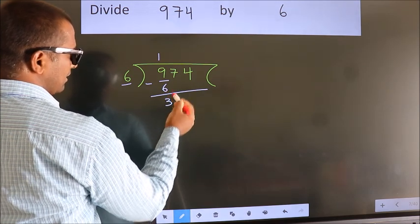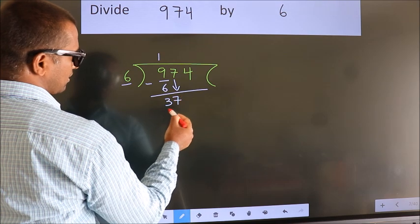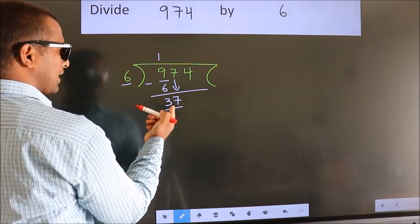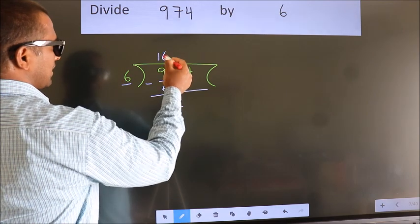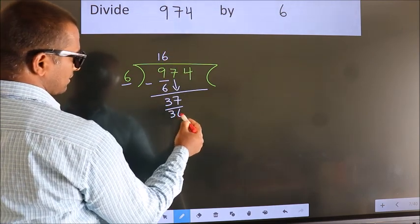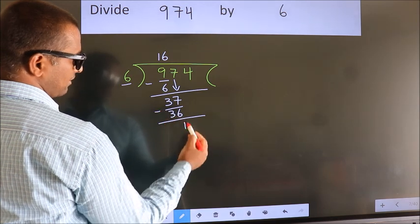After this, bring down the beside number. So 7 down. So 37. A number close to 37 in 6 table is 6 6 36. Now we subtract. We get 1.